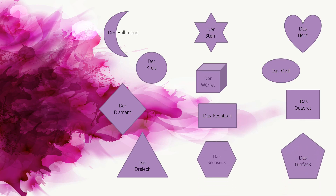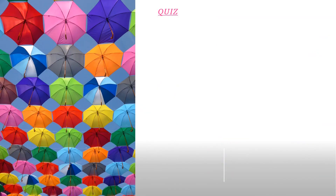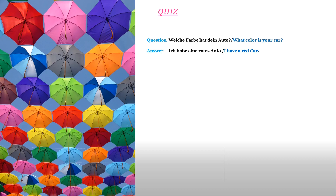Great. Good job. Now you have learned Farben und Formen. We will practice them in the quiz. Are you ready? Question 1: Welche Farbe hat dein Auto? — What color is your car? And the answer to that: Ich habe ein rotes Auto — I have a red car. Now you can answer the color of your car. Welche Farbe hat dein Auto?